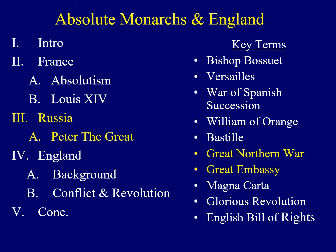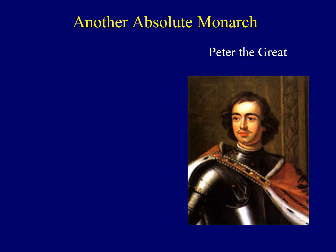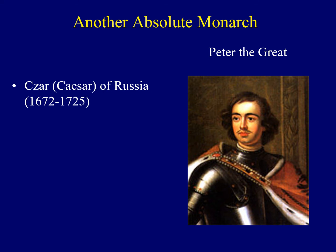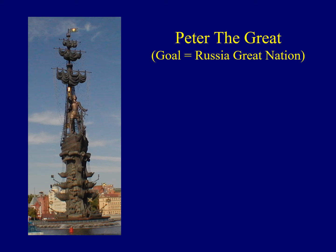Now that we've explored absolute monarchy in France, let's move to the east and look at Peter the Great in Russia. On the right, we see a painting of Peter the Great. He was the Tsar of Russia — 'Tsar' being Russian for the word Caesar, as the Russians tried to harken back to the Roman Empire of the ancient world. Peter was 6 feet 8 inches tall, much taller than Louis XIV. Peter the Great's goal was to ensure that Russia would become a great nation. In many ways, Russia was a backward, second or third-tier country in this era.